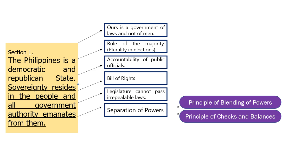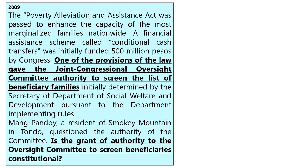Especially if you are taking the bar exams, you should already know the keywords. In the 2009 bar, related to our topic of separation of powers: Is the grant of authority to the Oversight Committee to screen beneficiaries constitutional? The Poverty Alleviation and Assistance Act was passed to enhance the capacity of the most marginalized families nationwide — similar to what happened in 2020 and 2021 with the ayuda. A conditional cash transfer financial assistance scheme was funded 500 million pesos by Congress. One provision gave the Joint Congressional Oversight Committee the authority to screen the list of beneficiary families — work that is supposed to belong to the DSWD. Mang Pandoy, a resident of Smoky Mountain in Tondo, questioned the authority of the committee.